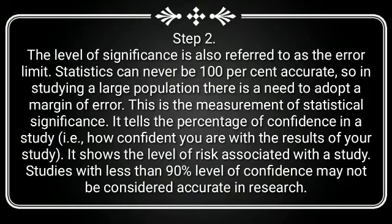Step 2. The level of significance is also referred to as the error limit. Statistics can never be 100% accurate. So in studying a large population there is a need to adopt a margin of error. This is the measurement of statistical significance. It tells the percentage of confidence in a study.